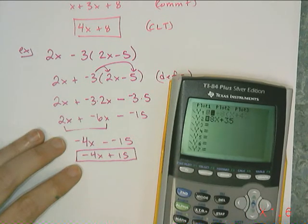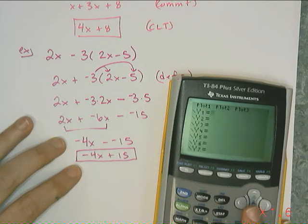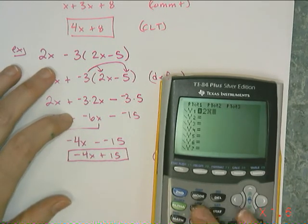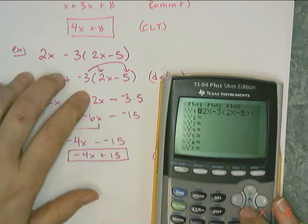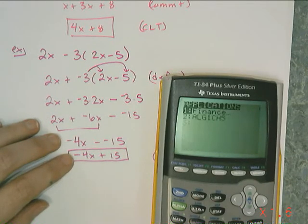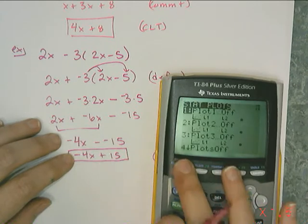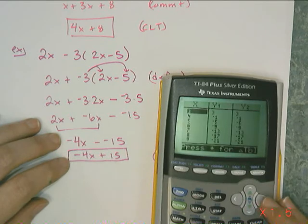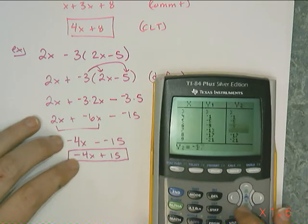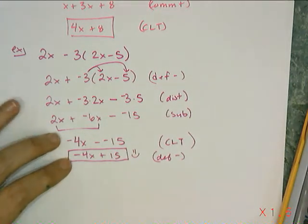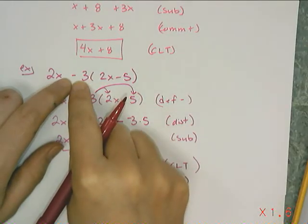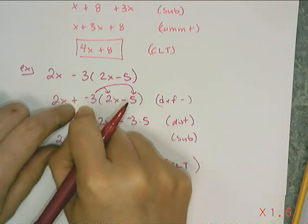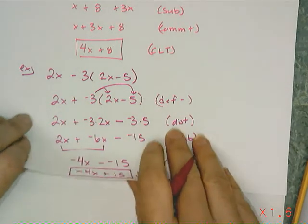I'll go to y equals and only check the original against my answer at first. The original is 2x minus 3 times (2x minus 5), and my answer is negative 4x plus 15. If I check the tables and they're identical, then the answer is confirmed correct. And they are — so that's the boxed answer. The key to this kind of problem is realizing I'm not distributing a 3, I'm distributing a negative 3. So I changed that to plus a negative 3, then distributed and combined like terms as normal.